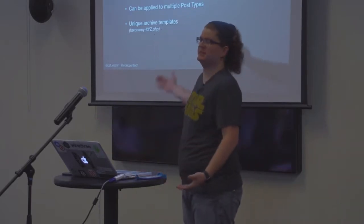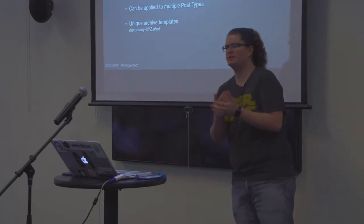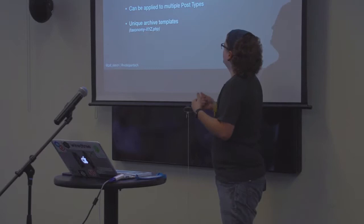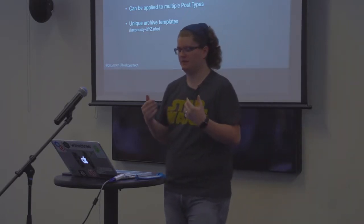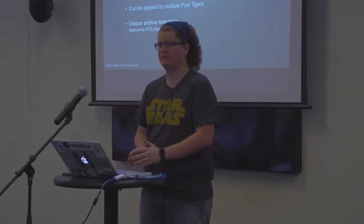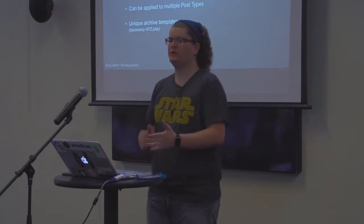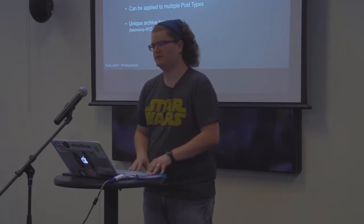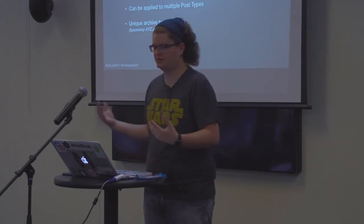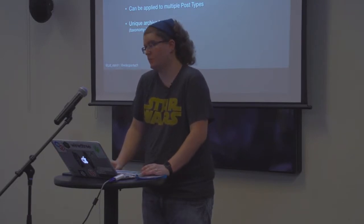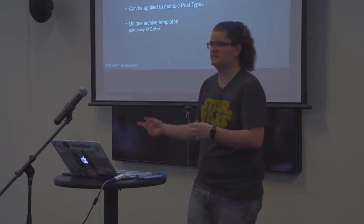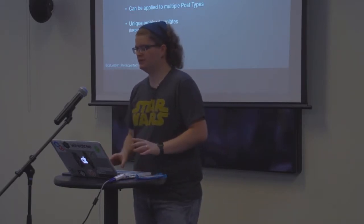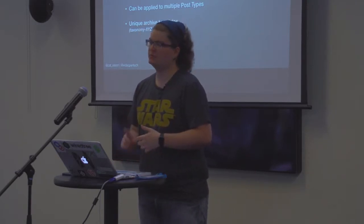Now let's talk about breeds — or in this case, custom taxonomies. We have two kinds built into WordPress: categories, which are hierarchical, and tags, which are not. They can be applied to multiple post types and cross-pollinated. Since we've made dogs as our post type and want to classify breeds, we could apply breeds to posts and dogs, but that's confusing to an end user and doesn't make sense from a data architecture standpoint. So we'll create a custom taxonomy that relates only to our newly created custom post type, dogs.